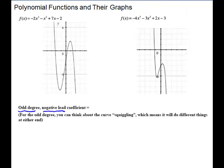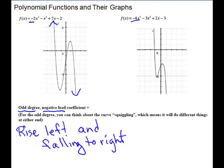Our next two pictures are functions that have an odd degree — this one is x to the third (degree three) and the second is degree five. These look like cubes but they are upside down. Notice that the leading coefficient in both cases is negative — that's what makes them turn upside down. So they are rising to the left and falling to the right. Same here: rising to the left, falling to the right.